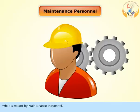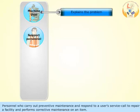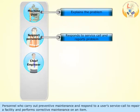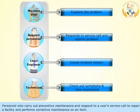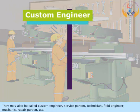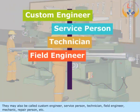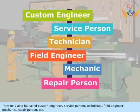What is meant by Maintenance Personnel? Personnel who carry out preventive maintenance and respond to a user's service call to repair a facility and perform corrective maintenance on an item. They may also be called Custom Engineer, Service Person, Technician, Field Engineer, Mechanic, Repair Person, etc.